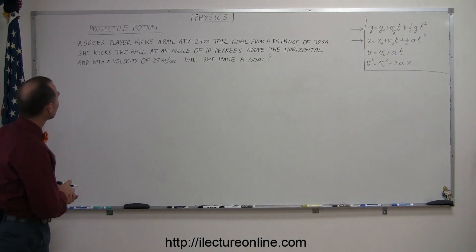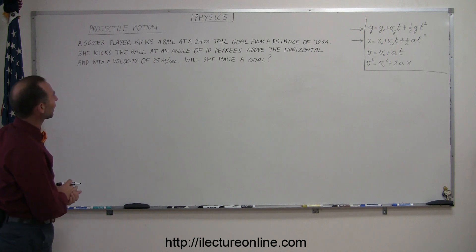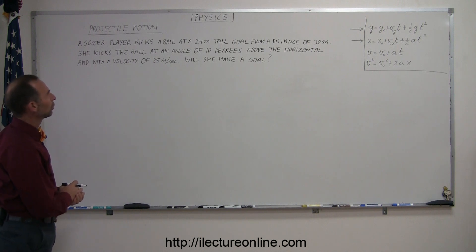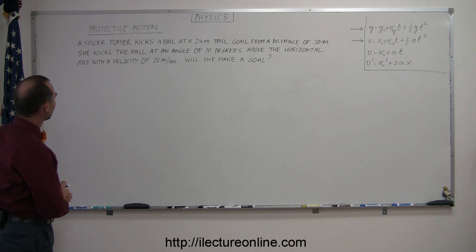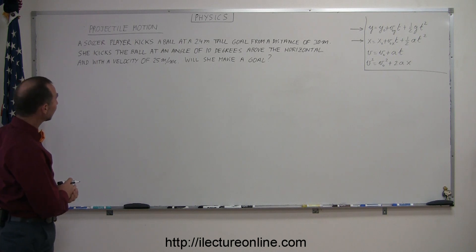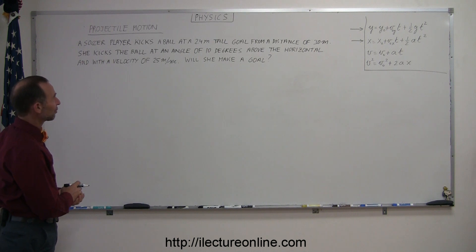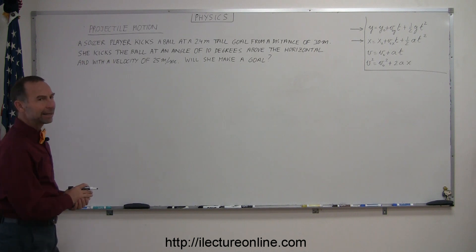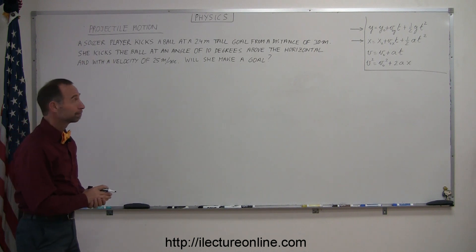Let's read the problem. A soccer player kicks a ball at a 2.4 meter tall goal from a distance of 30 meters. She kicks the ball at an angle of 10 degrees above the horizontal and with a velocity of 25 meters per second. Will she make a goal?